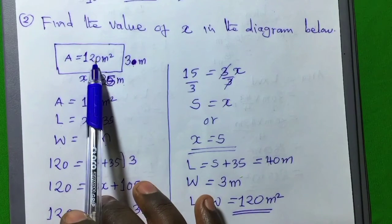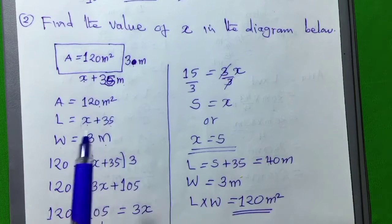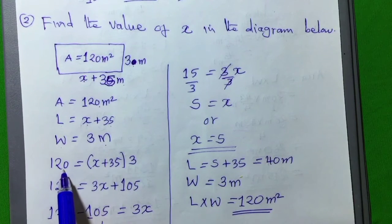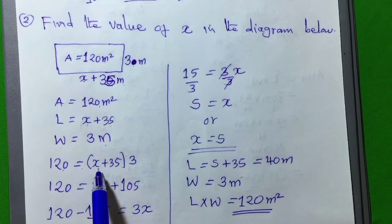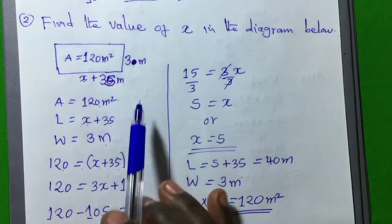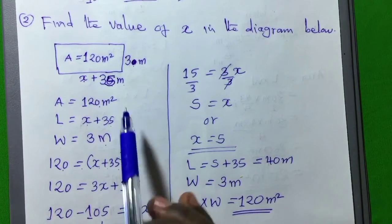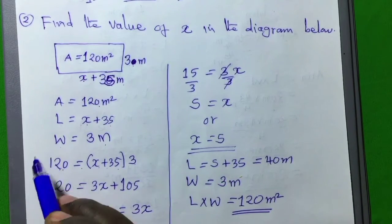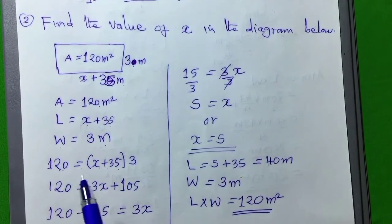Now, let's substitute this equation and say area which is equal to L times W. Now let's say area which is 120 is equal to x plus 35, which is the length of the rectangle, multiplied by 3, which is the width of the rectangle, we will get 120.